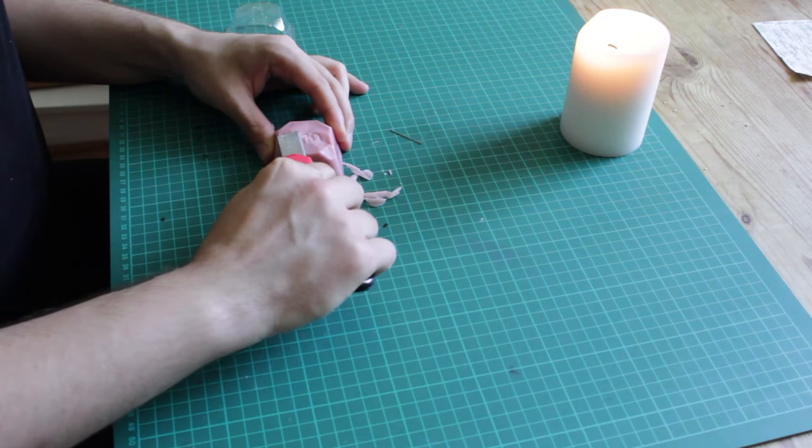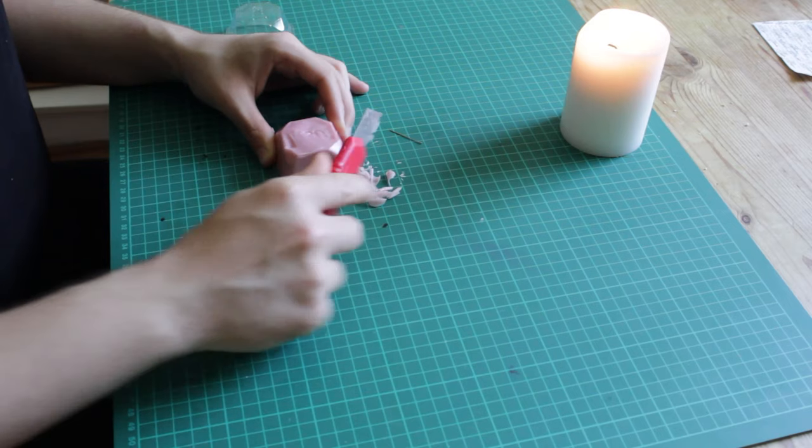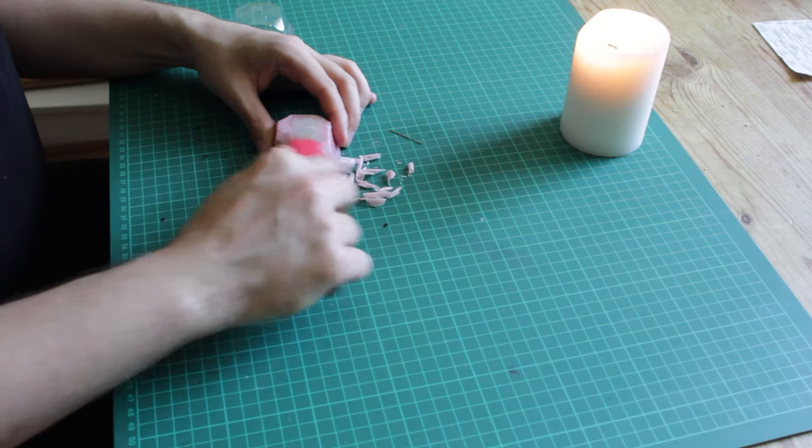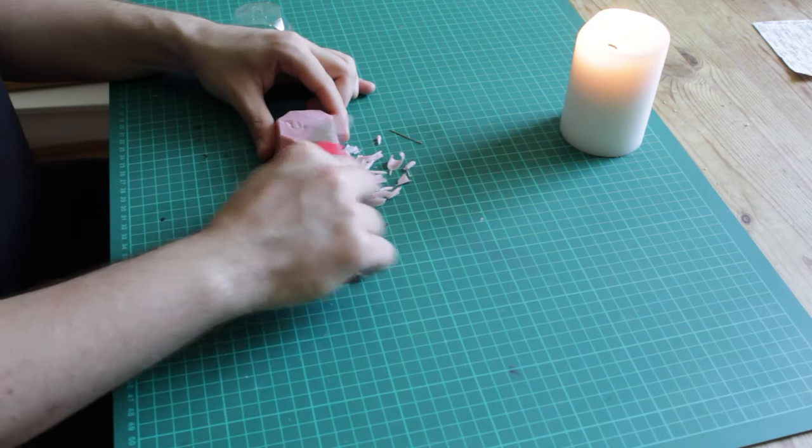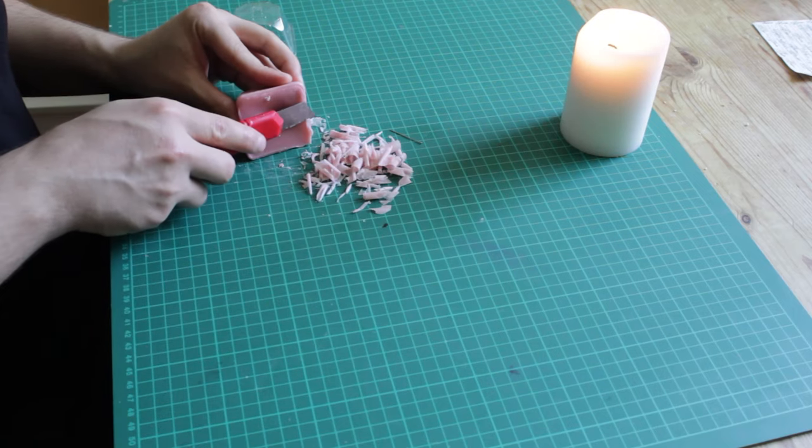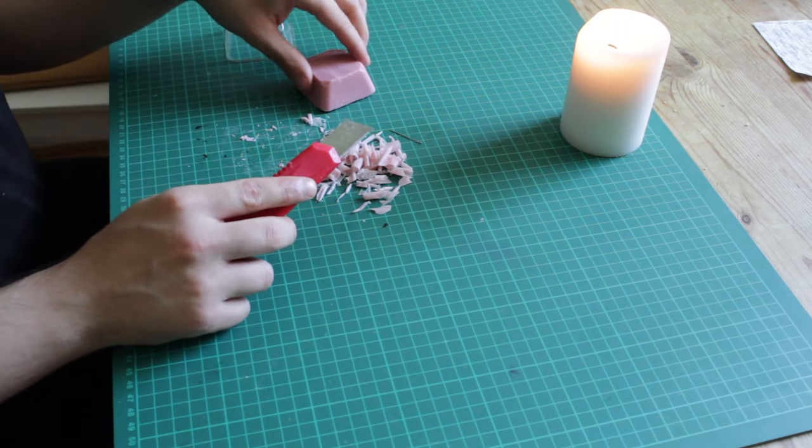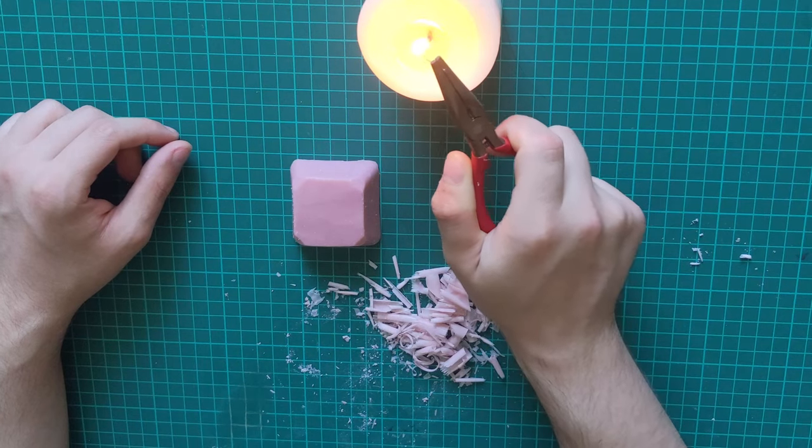For the base of my mannequin, I am smoothing it out with a utility knife. Then I am poking a hole with a hot needle for the stand.